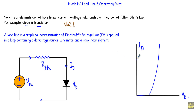For example, diodes and transistors are nonlinear elements. If you look at the forward characteristics of a diode, you will see the current ID increases exponentially with the increase in forward voltage. So our diode is a nonlinear element. The I-V characteristics of many nonlinear devices are complex in nature.